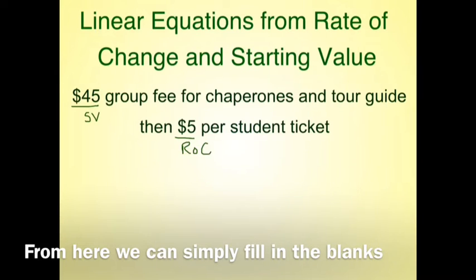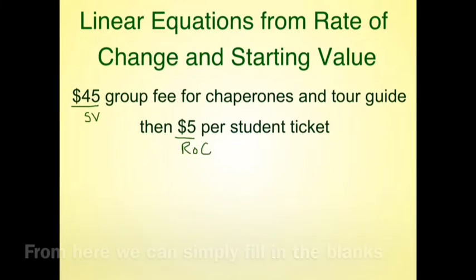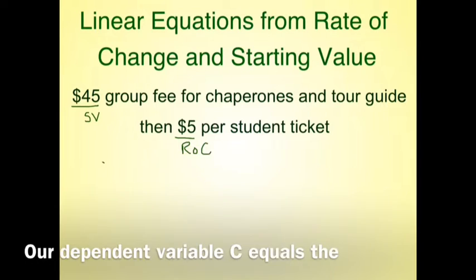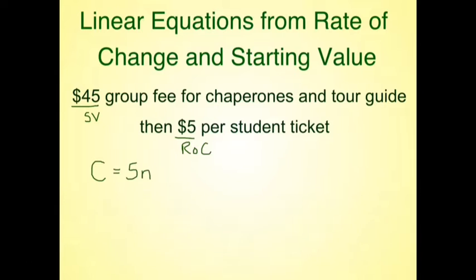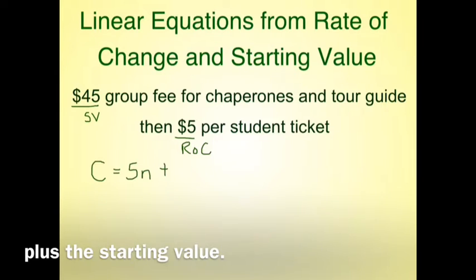From here, we can simply fill in the blanks to write the model. Our dependent variable C equals the rate of change times the independent variable plus the starting value.